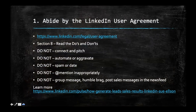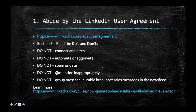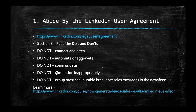We're all in an environment where we have to be compliant and take care of governance, so I want to encourage all of you to abide by the LinkedIn user agreement. There is a section number eight on do's and don'ts — very easy to read. Things I definitely do not recommend: connect and pitch, which is sell people things; automate — you're not allowed to automate any processes on LinkedIn; don't aggravate, don't spam, don't use it for dating, and don't at-mention inappropriately.